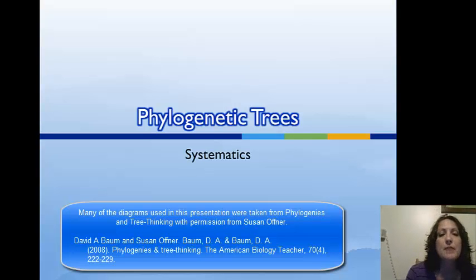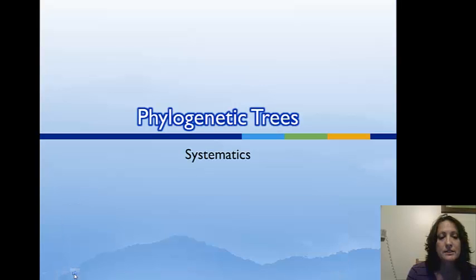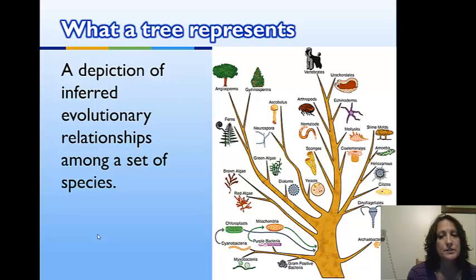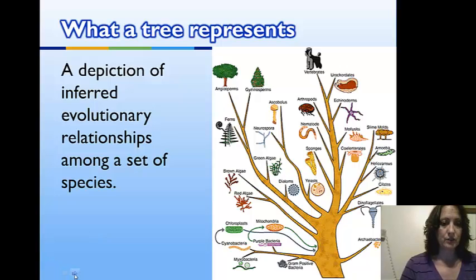This lecture is going to be on systematics, which is the study of phylogenetic trees and cladistics. All trees show evolutionary relationships among sets of species. This is an evolutionary tree of all living things. We're going to be looking at cladograms, which are a specific type of phylogenetic tree.